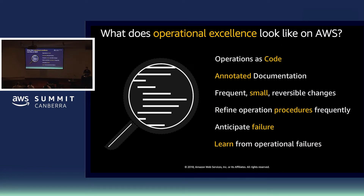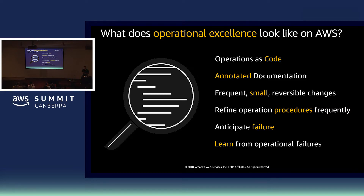Before I dive into my expert tips, I wanted to take a quick step back and talk about something you will have heard of today: the well-architected framework. One of the pillars in particular appeals to me, which is the operational excellence pillar. The combination of Kubernetes and AWS allows you to build a solution that at its nucleus will have all of these core principles built into it — operations as code, annotated documentation, and release cadences. See if you can spot them as we go through.